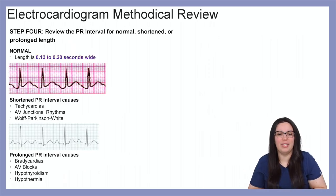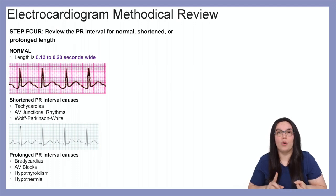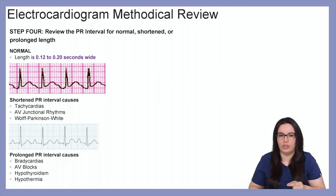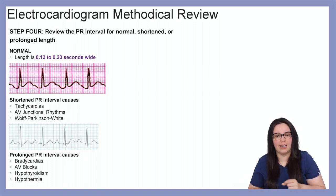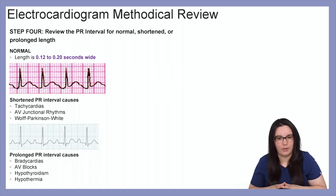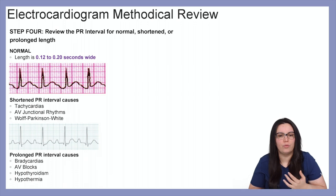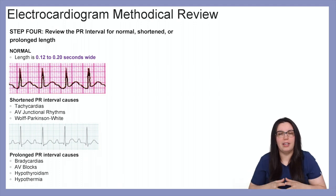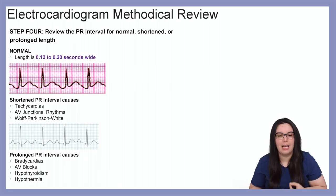Step four: review the PR interval for normal, shortened, or prolonged length. A normal length is between 0.12 to 0.2 seconds wide. Shortened PR intervals can cause tachycardias, AV junctional rhythms, or Wolff-Parkinson-White rhythms. Prolonged PR intervals can be caused by bradycardias, AV blocks, atrioventricular blocks, hypothyroidism, and hypothermia.